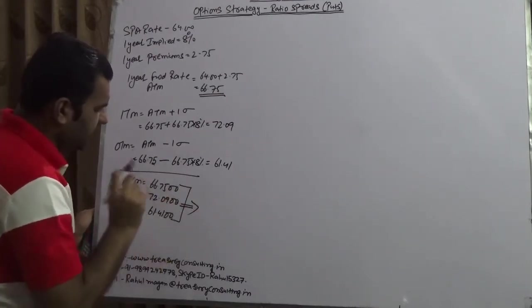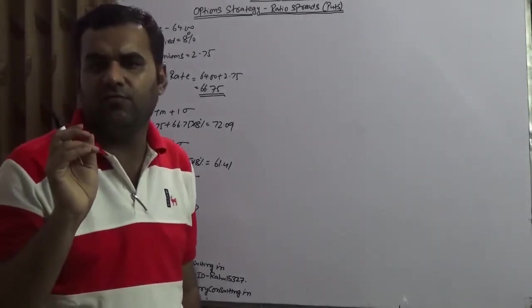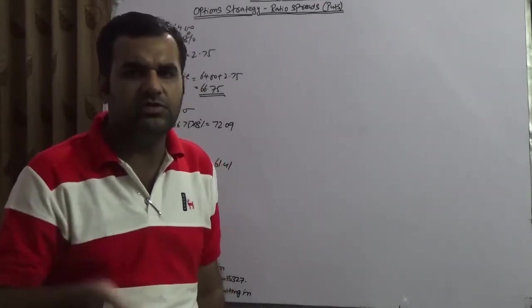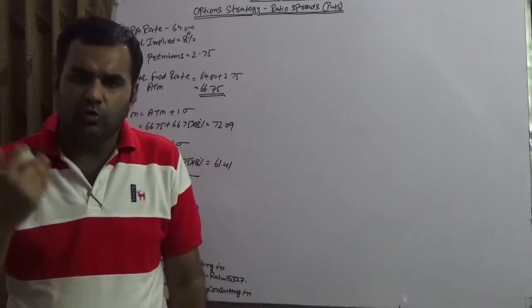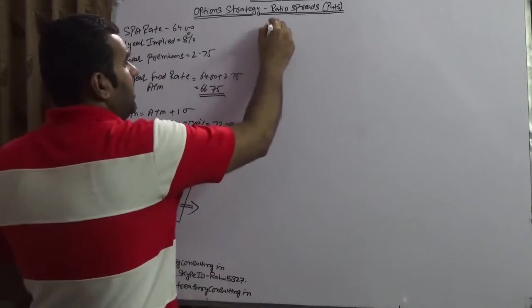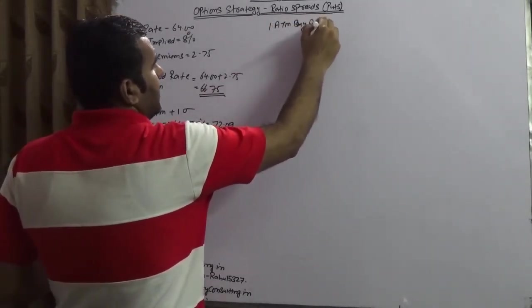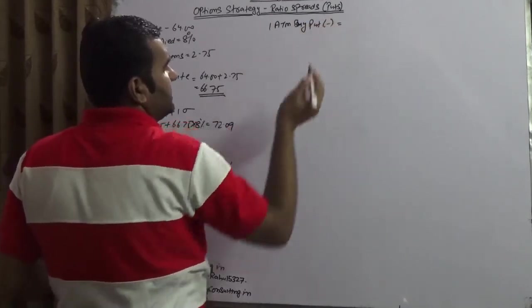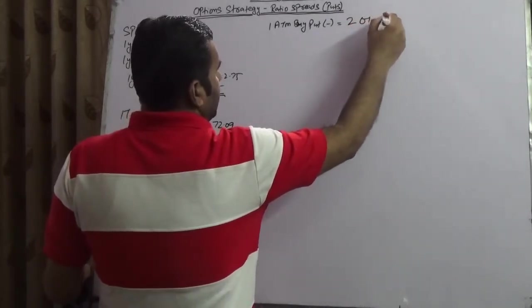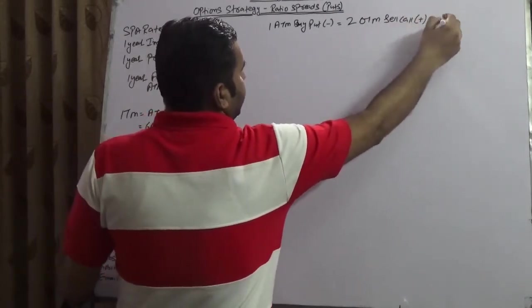So in short, at the money is 66.75, in the money is 72.09 and out of the money is equal to 61.41. Now, sitting today, Thomson Reuters is suggesting that one at the money on the buy put side, the premium which you are paying is equals to two out of the money sell call. So the net credit is zero.